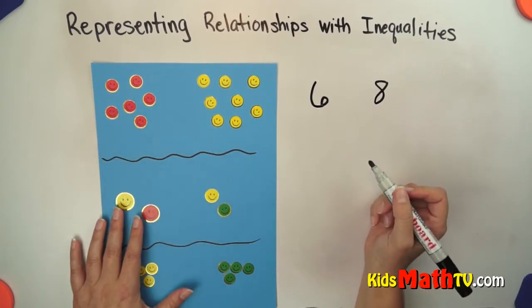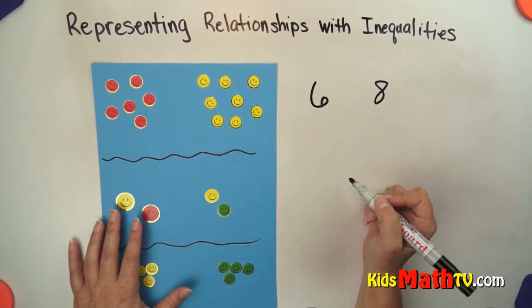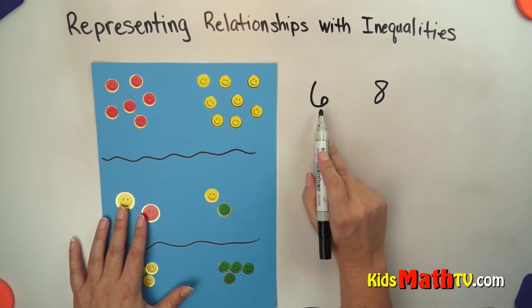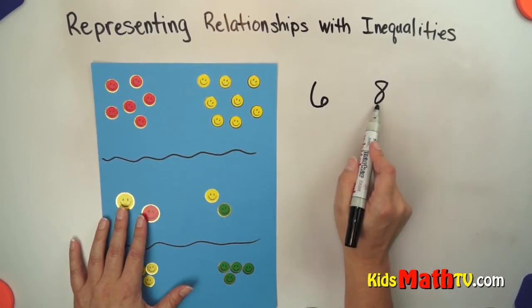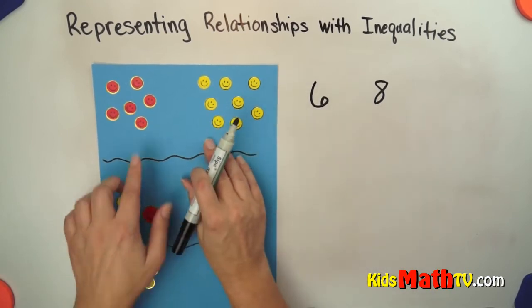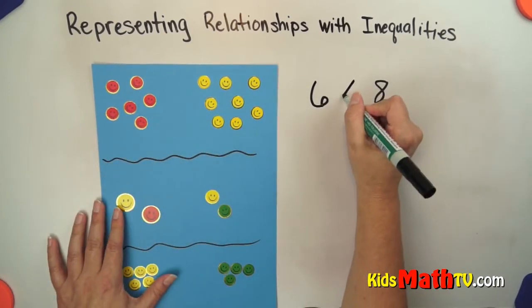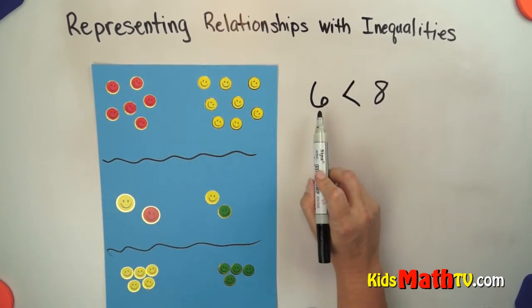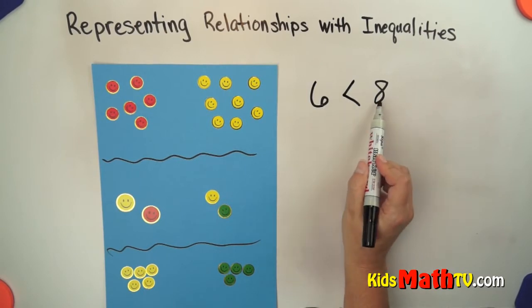We want to use either less than, greater than, or equal to. Is 6 less than, greater than, or equal to 8? Well, 6 is less than 8. So we write it this way and we say 6 is less than 8.